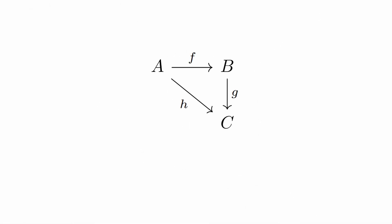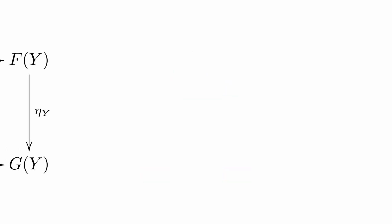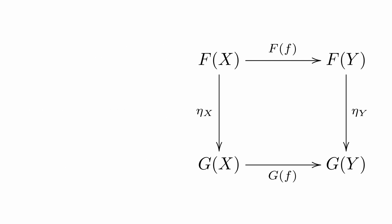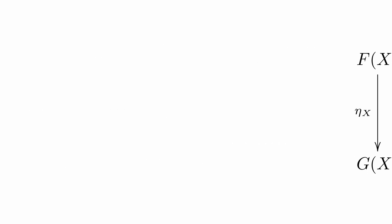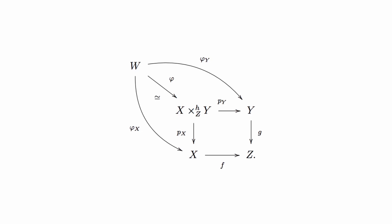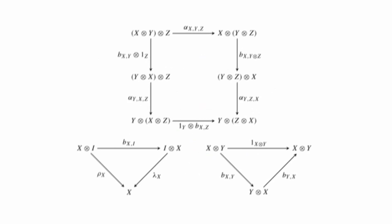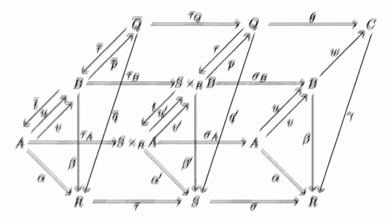Fact 5: You can take some objects and morphisms from a category and arrange them to make a diagram. If all routes through the diagram between the same two objects evaluate to the same morphism, what you have there is a commutative diagram — we say the diagram commutes. Commutative diagrams are equations for the category theorist. You thought a picture wasn't a proof? Think again. Commutative diagrams are everywhere. Too many places, probably. All right, that's enough. Stop.